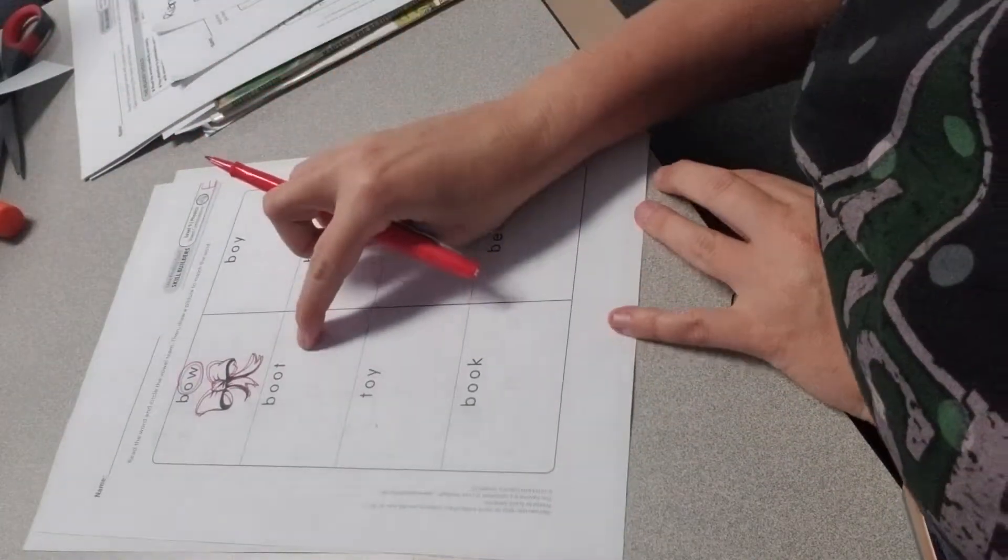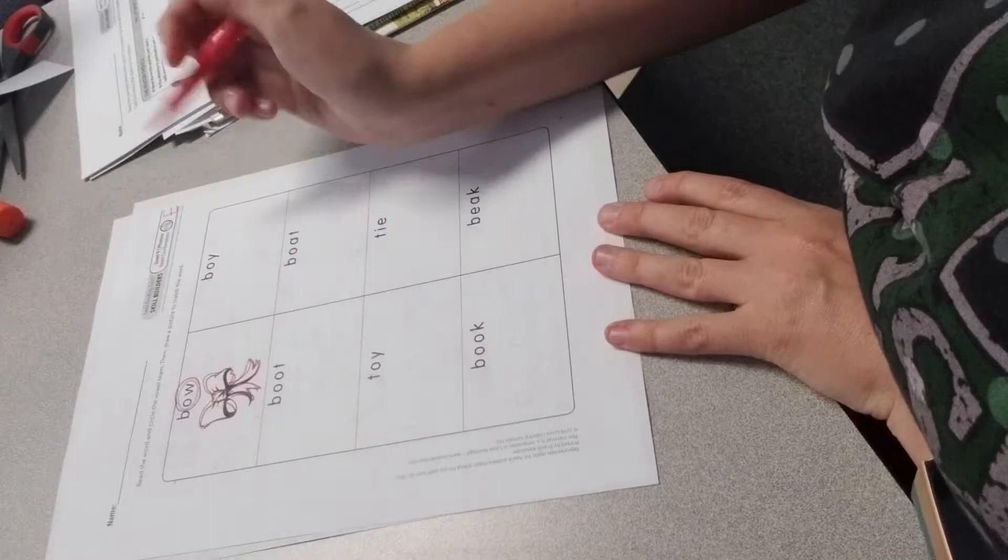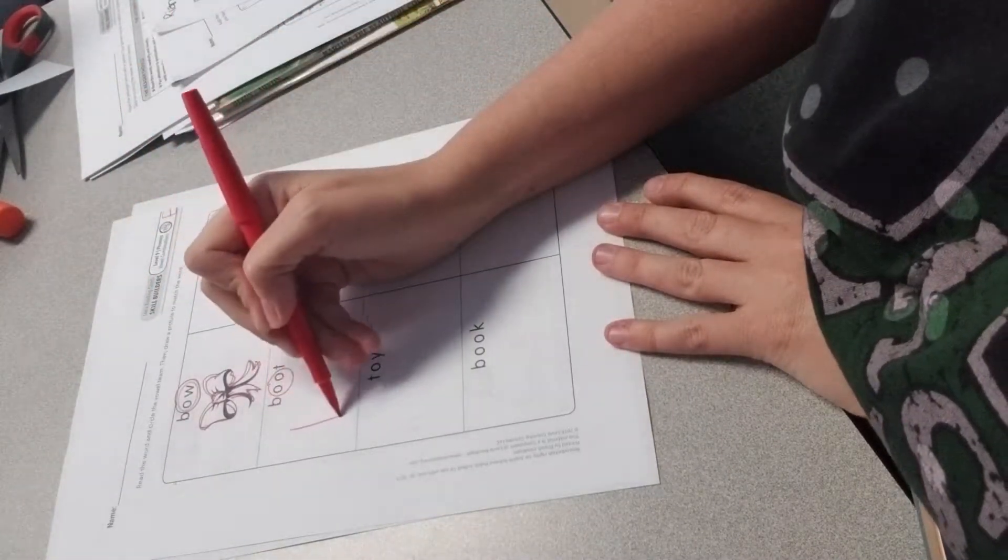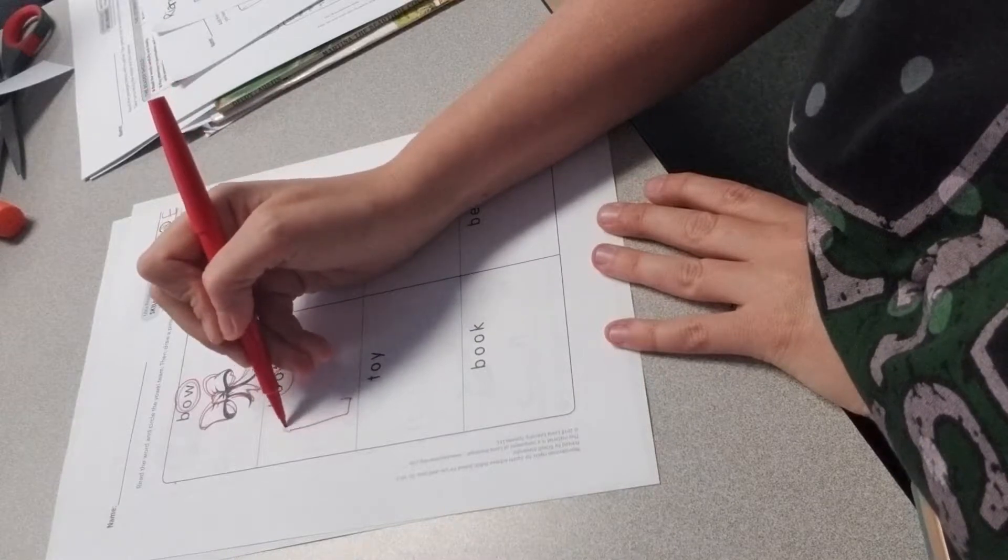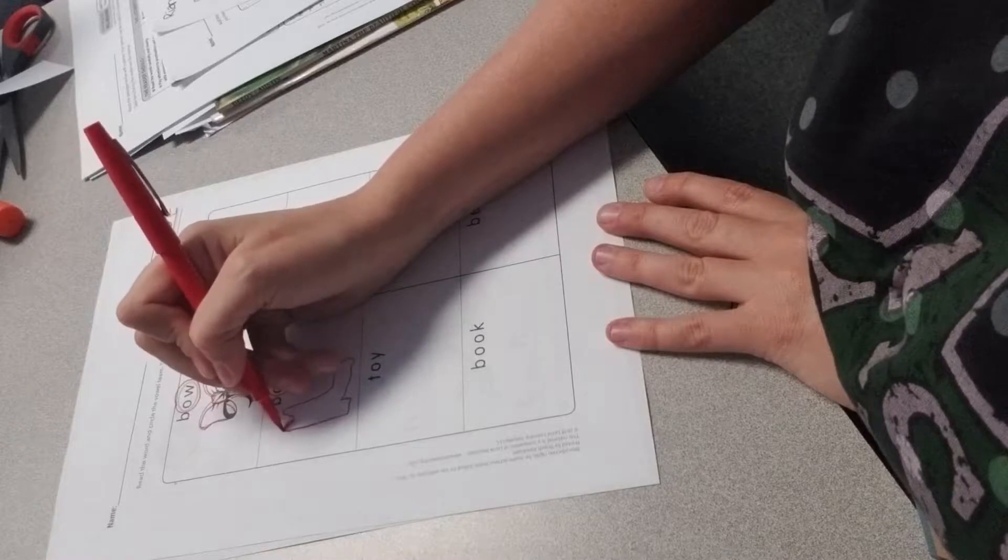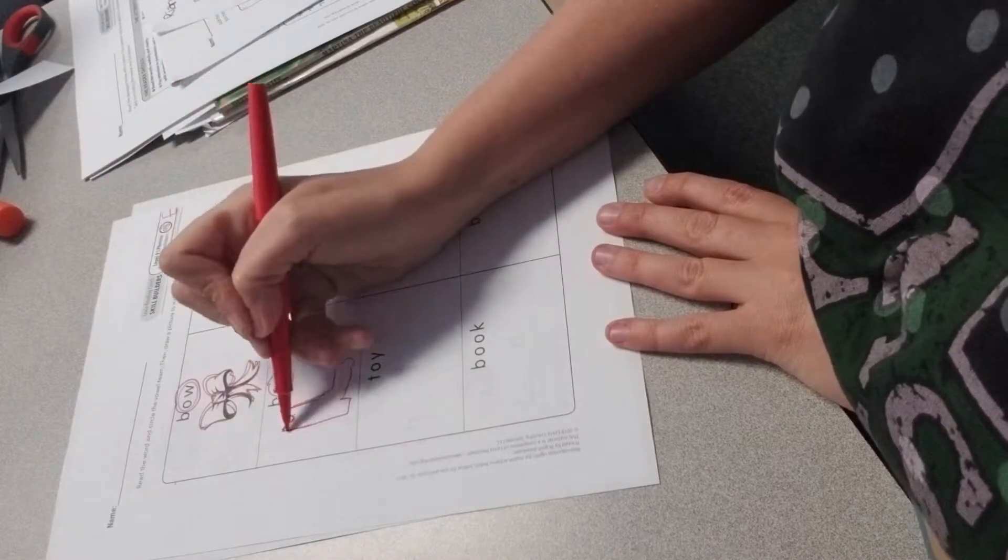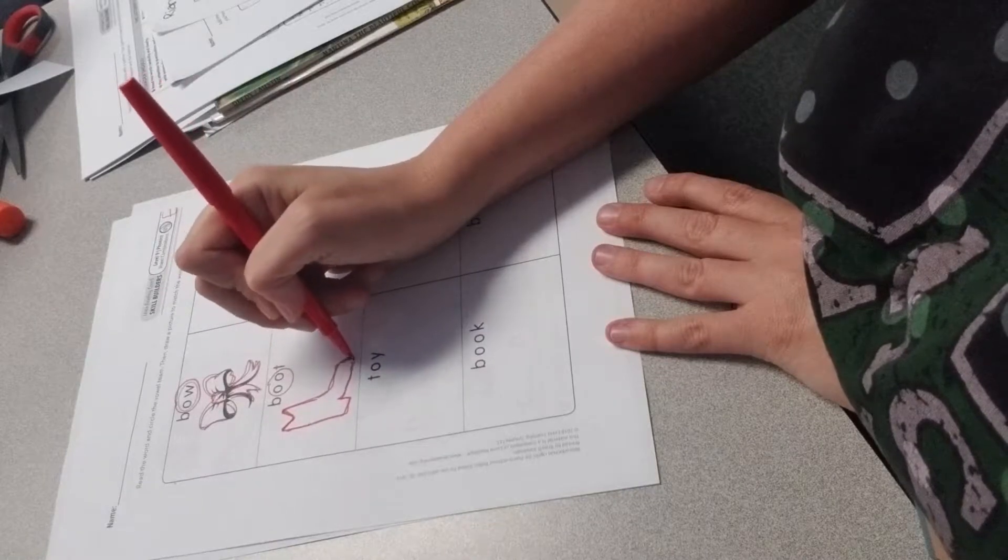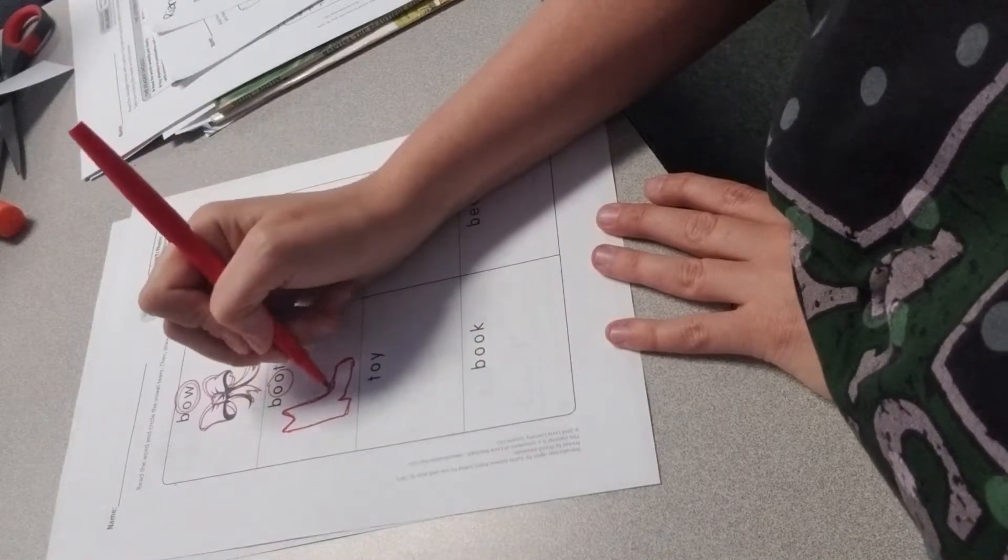All right, then the next one, boot. So the vowels here are O-W. So I'm going to circle those two. And then I'm going to draw a beautiful boot. Yours does not have to be as beautiful as mine. It probably will be a lot more beautiful because I'm not drawing very well today for some reason. So that's my drawing of a boot.